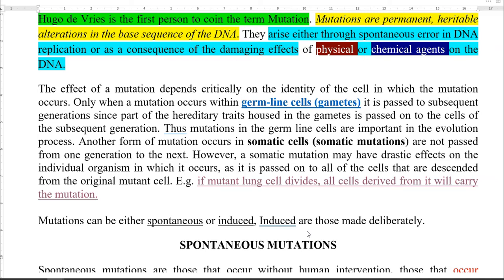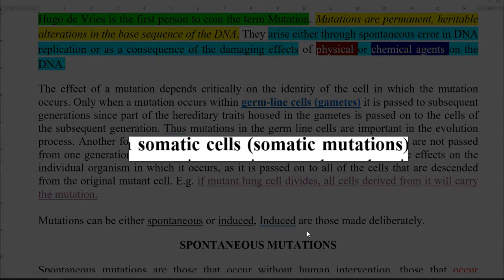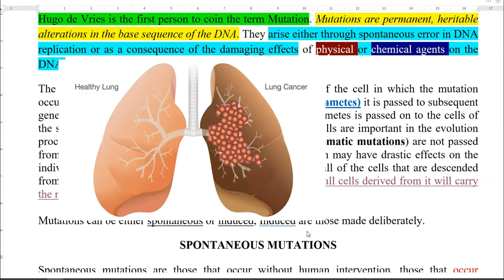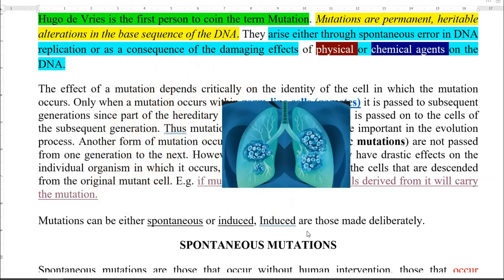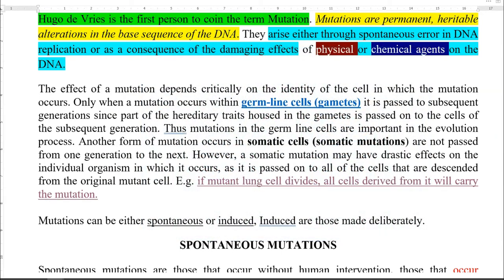Whereas if mutations are occurring in somatic cell lines — that is cells other than the gametes — they may not be passed to the next generation. However, somatic mutations may have drastic effects on the individual organism. Consider the example of a mutant lung cell: if a lung cell has mutated and starts dividing, all the cells derived from that mutant lung cell will be carrying that particular mutation.